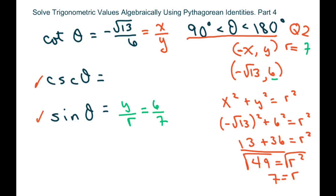And then cosecant is just the reciprocal r over y, so that's just 7 over 6.